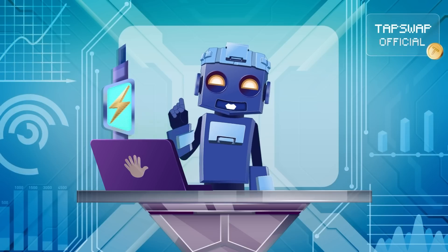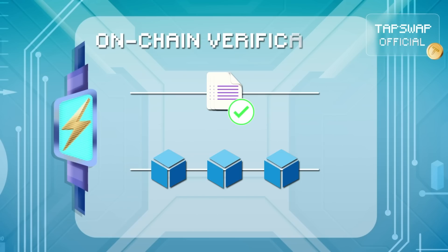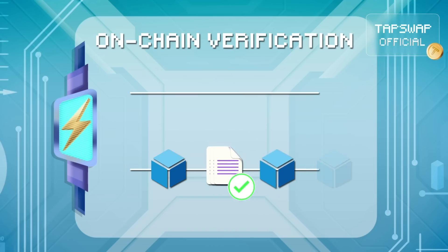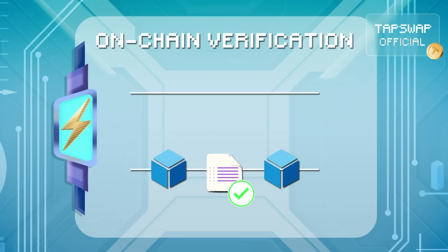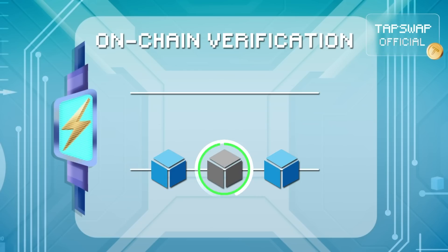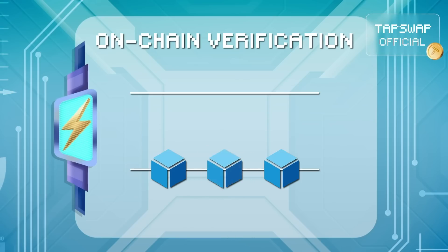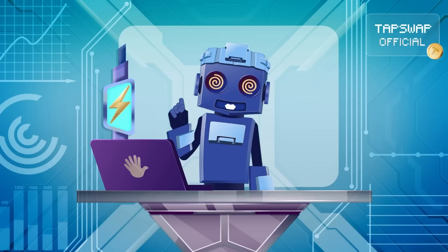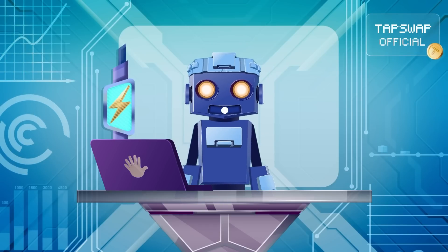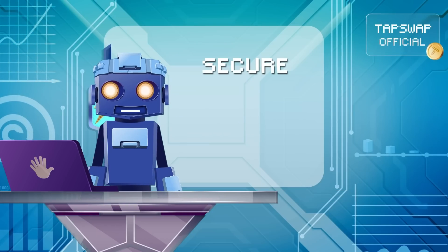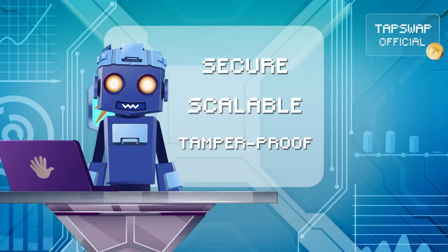The next step is on-chain verification. The validity proof is sent to the layer 1 blockchain. The on-chain verifier contract checks the proof. If the proof is valid, the blockchain updates its state to reflect the transactions. This process ensures that the system is secure, scalable, and tamper-proof.